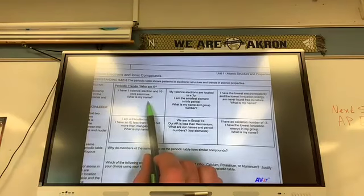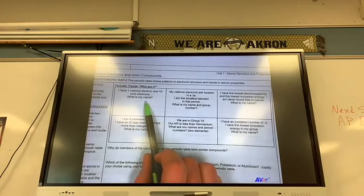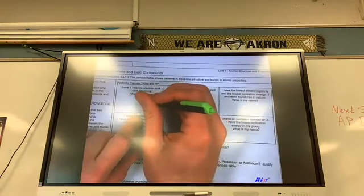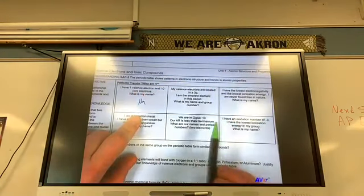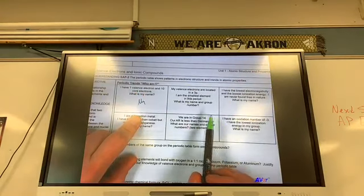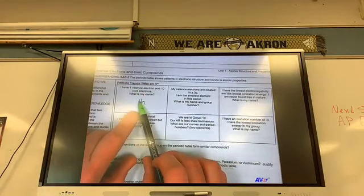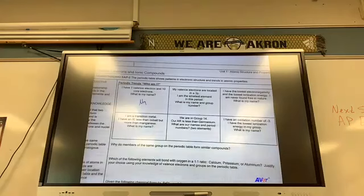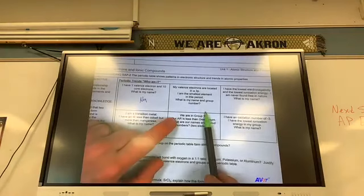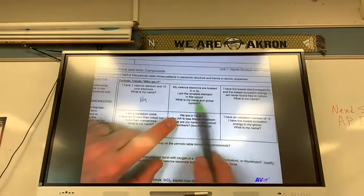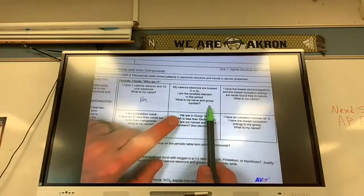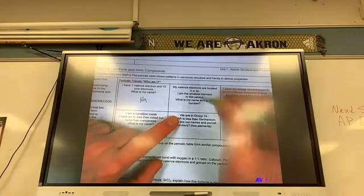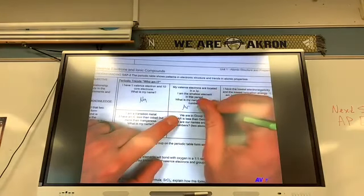I have one valence electron, 10 core electrons. What's my name? Sodium. So that means that 11 minus 10 is what? Which my core charge for this would be 1. You guys remember how we did that? Yeah. The big old packet. My valence electrons are located in a 3p. I'm the smallest element in this period. What's my name and group number? Argon. Group number 18.